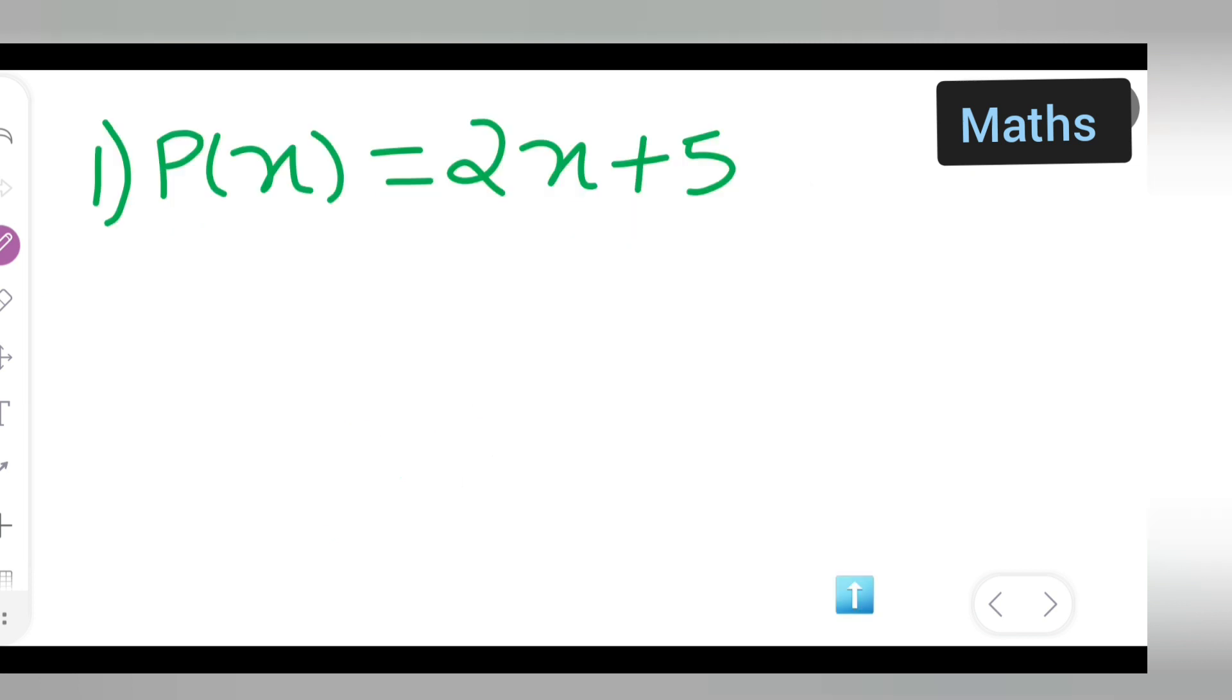In today's class we are going to find the zero of the polynomial P(x) = 2x + 5. First, write down this question.